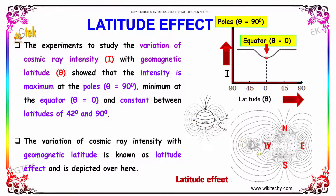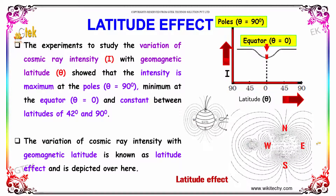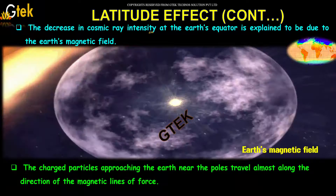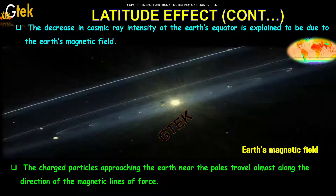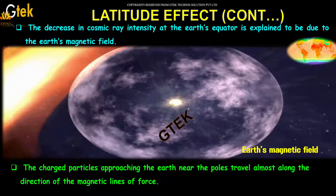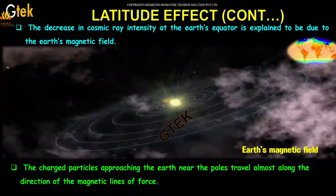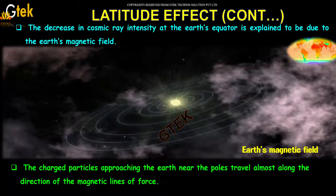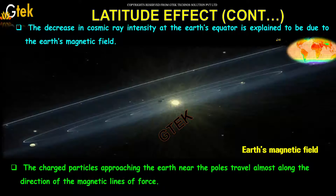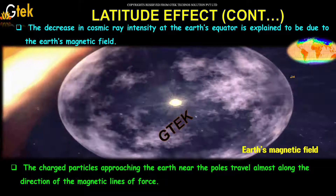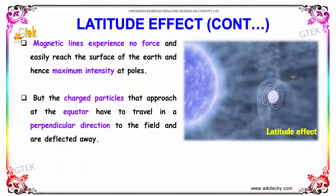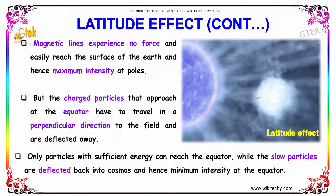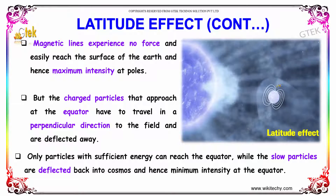You are able to see the latitude effect here. The decrease in cosmic ray intensity at the Earth's equator is explained due to the Earth's magnetic field. The charged particles approaching the Earth near the poles travel almost along the direction of the magnetic lines of force. The magnetic lines experience no force and easily reach the surface of the Earth, and hence maximum intensity is at the poles.